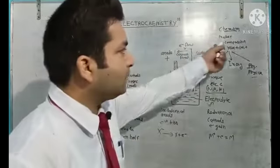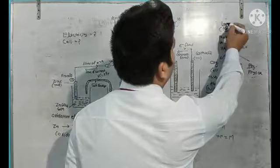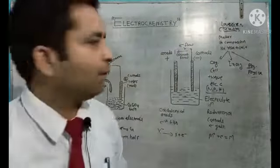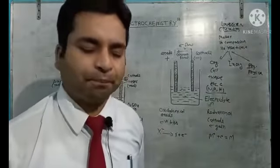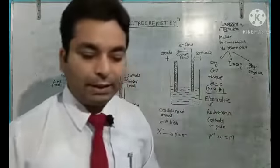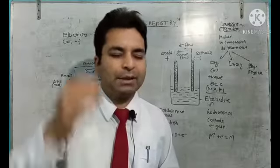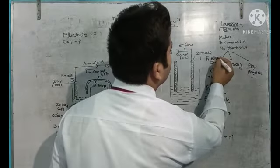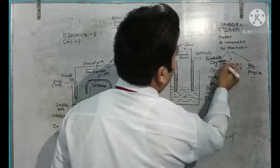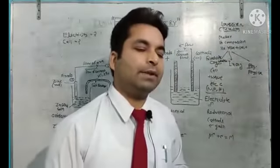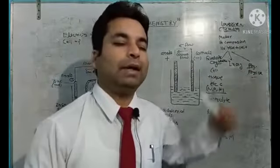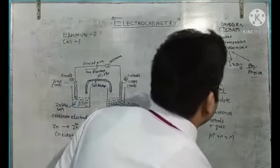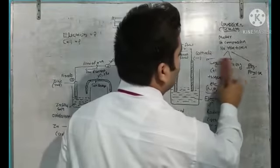The father of chemistry is Antoine Laurent Lavoisier. The father of organic chemistry is Friedrich Wöhler. The father of inorganic chemistry is Alfred Werner. And the father of physical chemistry is Wilhelm Ostwald. These are very important points about the branches of chemistry and their founders.